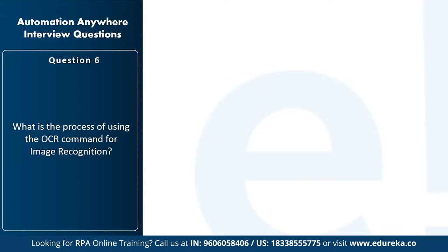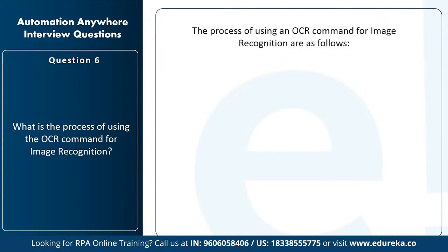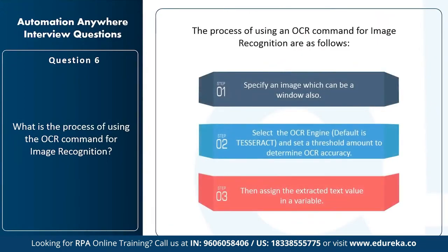The next question is: what is the process of using an OCR command for image recognition? Step one: specify an image, which can be a window. Step two: select the OCR engine — by default it is Tesseract — and set the threshold amount to determine OCR accuracy. Step three: assign the extracted text value to a variable so you can display the output in a message box or store it in a file.